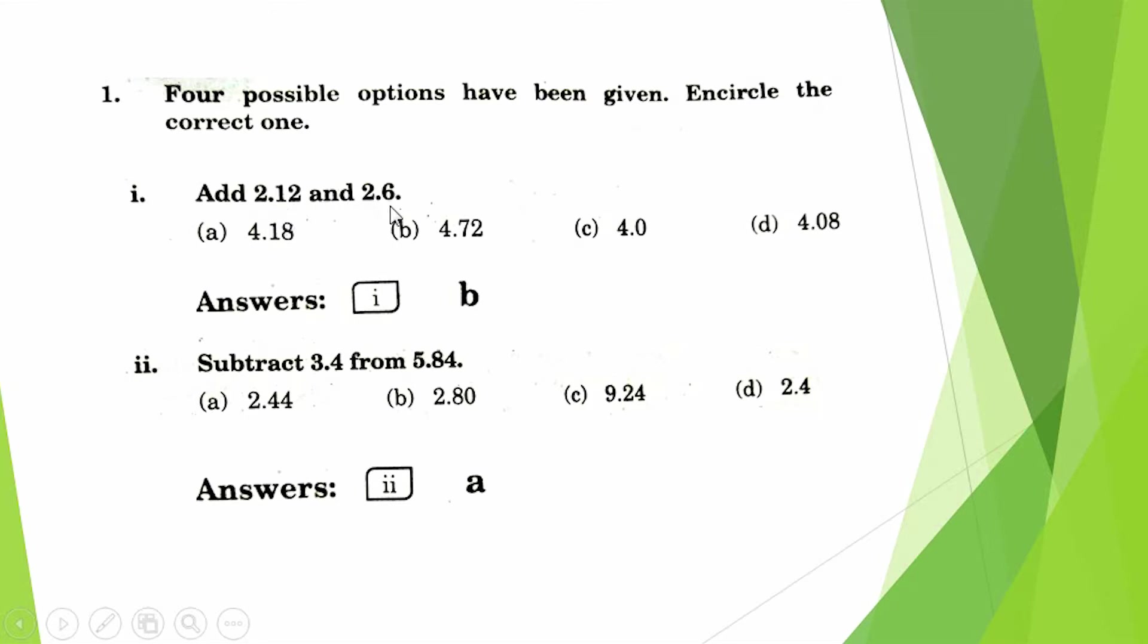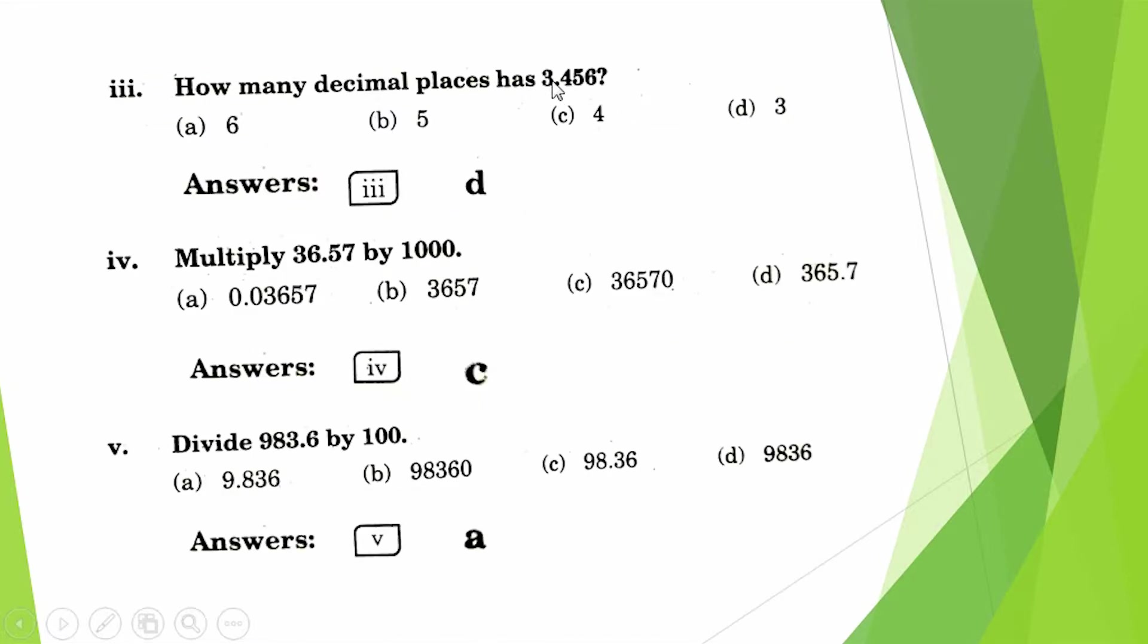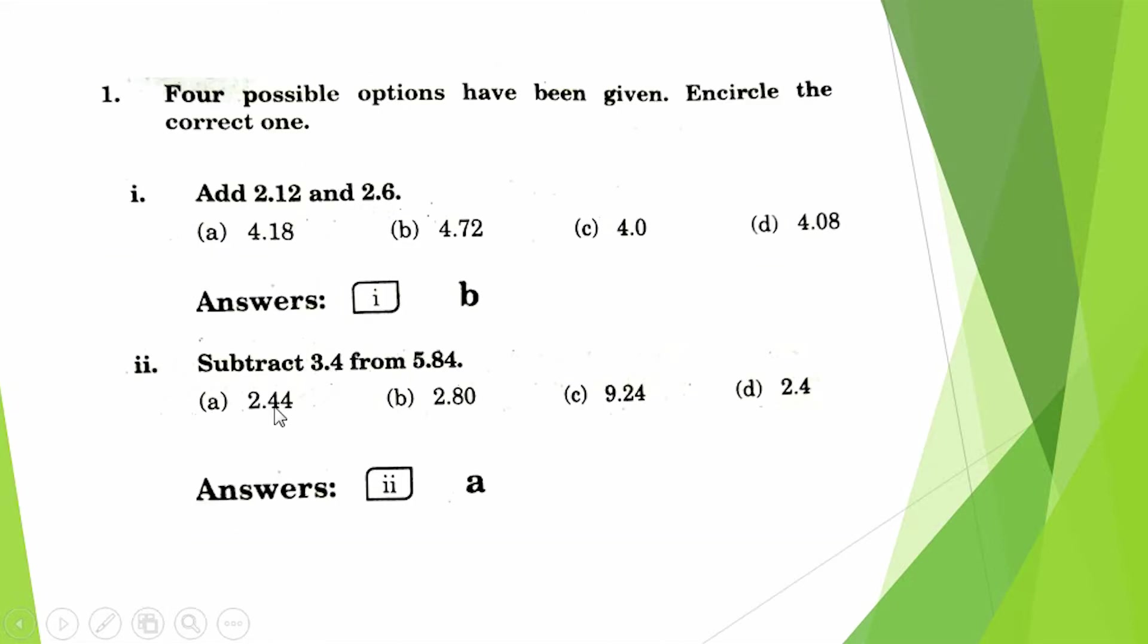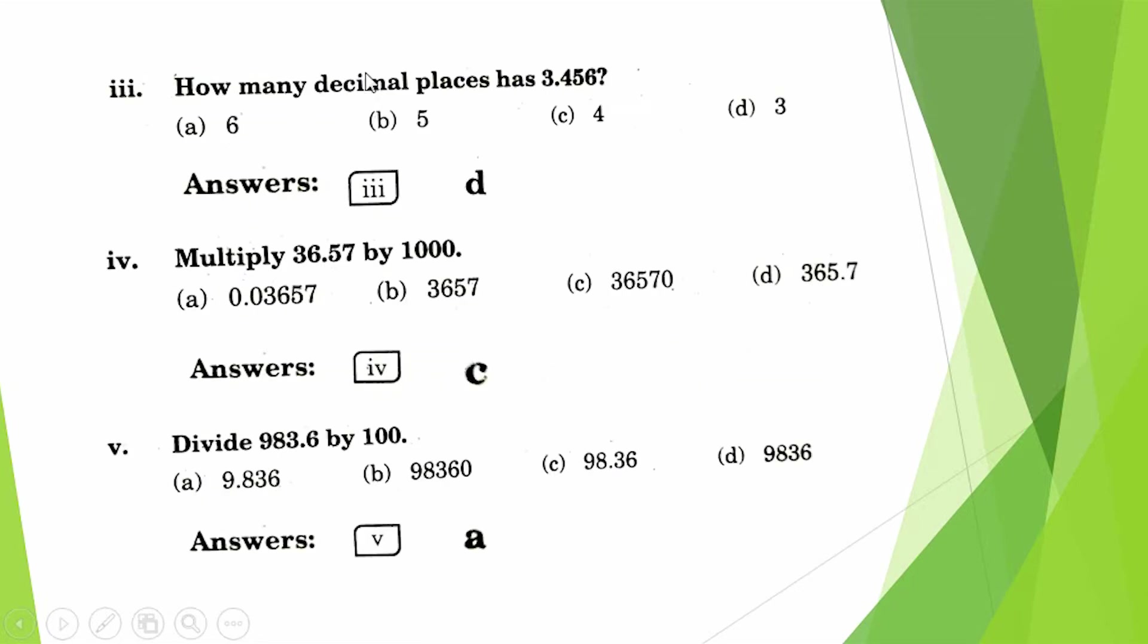Four possible options have been given. Encircle the correct one. Add 2.12 and 2.6. When we add, the answer will be 4.72. Subtract 3.4 from 5.84. The answer will be 2.44.